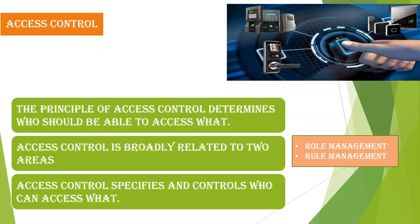Access control can be classified into role management and rule management. Role management is done by the client side — the client chooses their role and whether they have access to enter a particular website. Rule management is done by the server — the server imposes rules to be followed before entry, such as proving you are not a robot via a CAPTCHA. Only if you satisfy those rules can you enter the server.